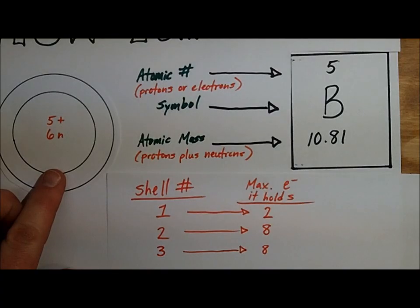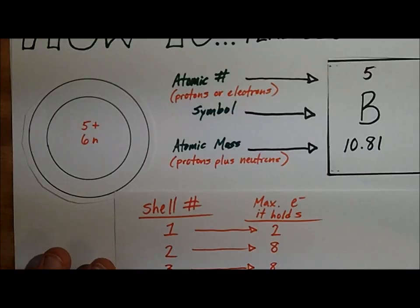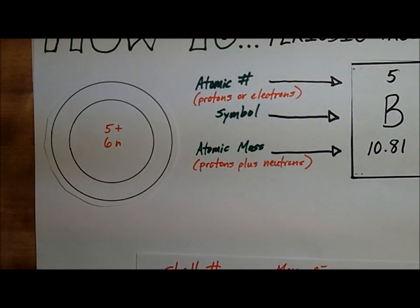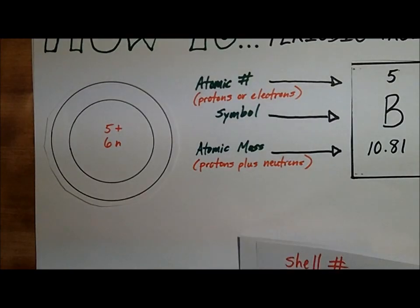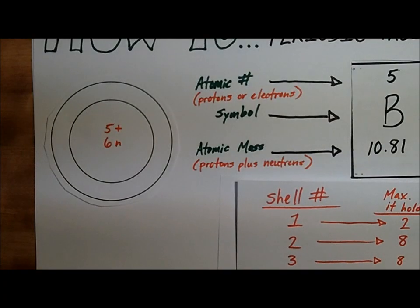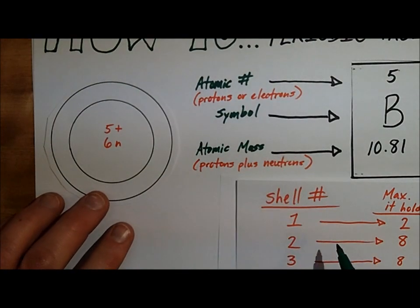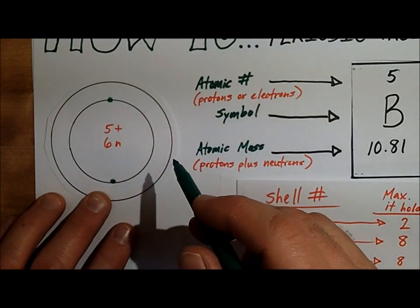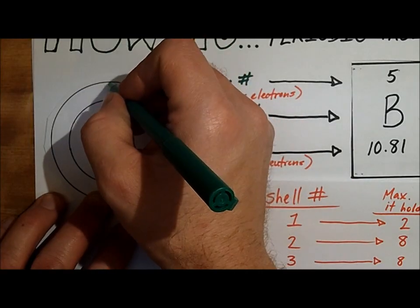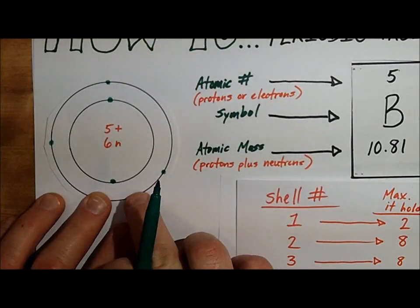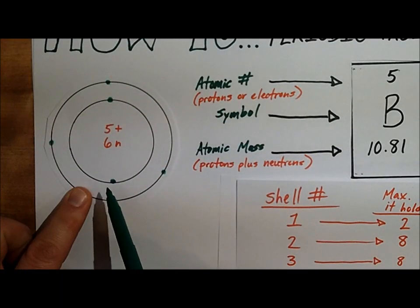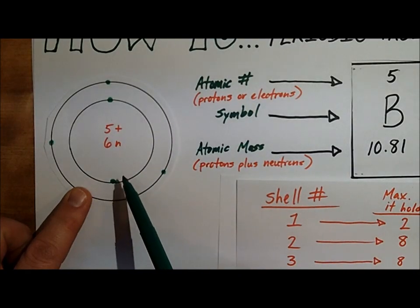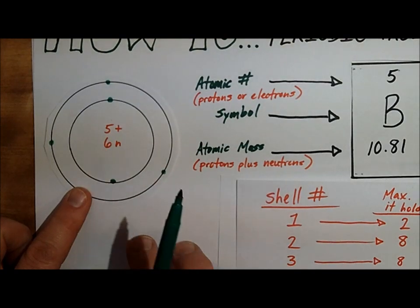So let's look at how to place the electrons following these rules. The electron number is the same as the proton number, so we have 5 electrons. Only 2 can fit in the first shell, so I'll put them there. The rest — 3 more, since I have 5 total — are going to go on the second shell. The shell is also called an orbital or energy level. So I have a total of 1, 2, 3, 4, 5. And now I'm done with that electron configuration.